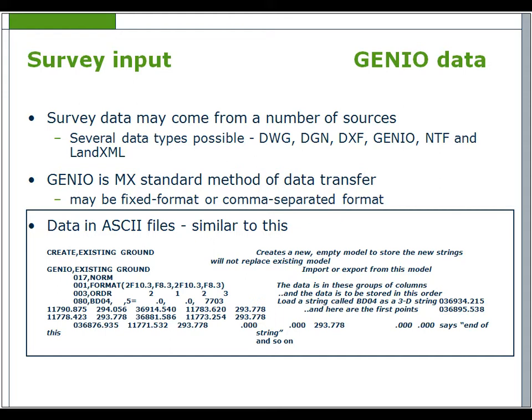A typical GENIO data file requires a CREATE model name, for example 'existing ground'. If the model already exists, a warning will be given. The next line will be GENIO comma model name — this is where the data will be placed. Make sure the model names are spelled the same.